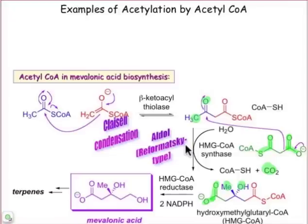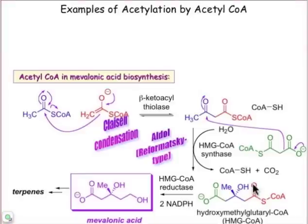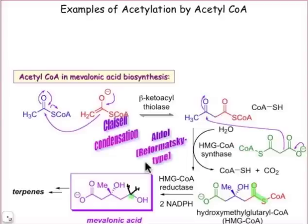I haven't shown you the full set of curved arrows, but I suspect you'd be able to draw those out for yourself. What happens next is a reduction reaction — remember, the reduction reaction involves the addition of hydride — and that transforms the thioester group into the hydroxyl group, adding hydrogen atoms where the carbonyl group used to be. Those are the overall steps in the biosynthesis of mevalonic acid, and you can see that acetyl-CoA plays a key role in each of these transformations.